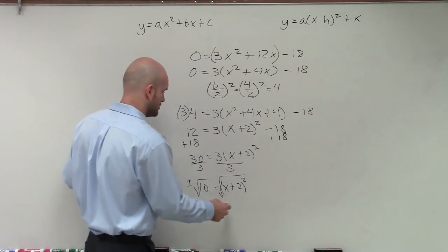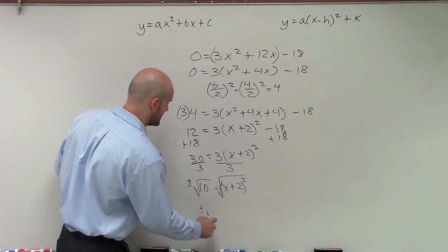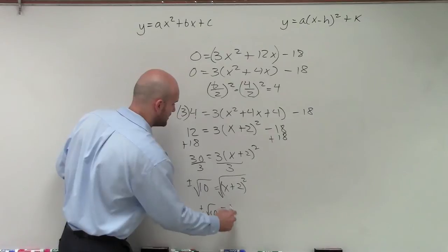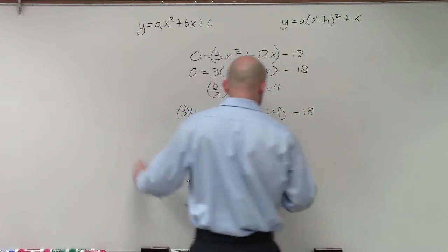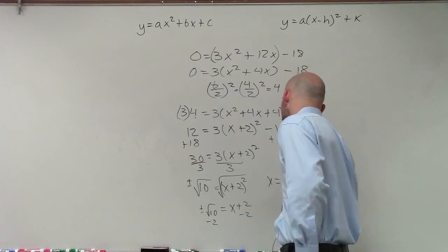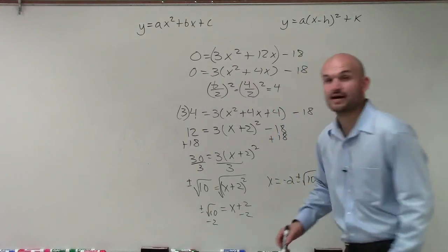Therefore, so now I have plus or minus the square root of 10 equals x plus 2. So now I subtract 2 on both sides, and my final answer is going to be x equals negative 2 plus or minus the square root of 10.